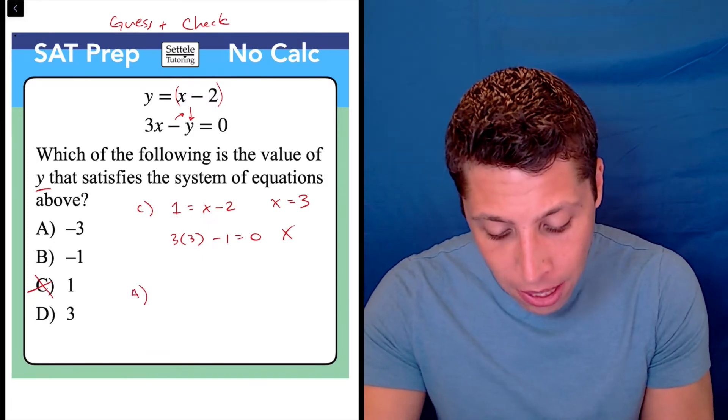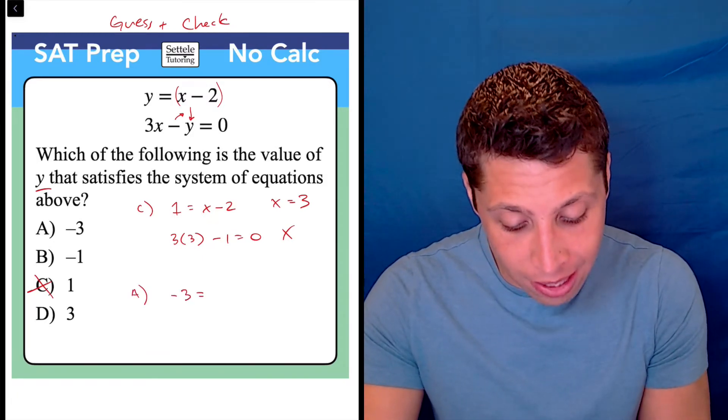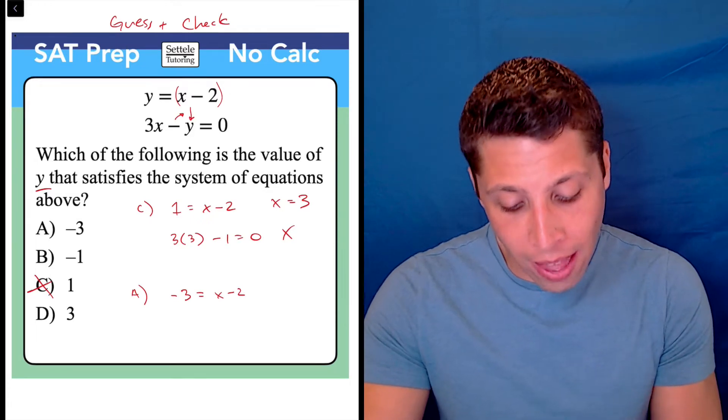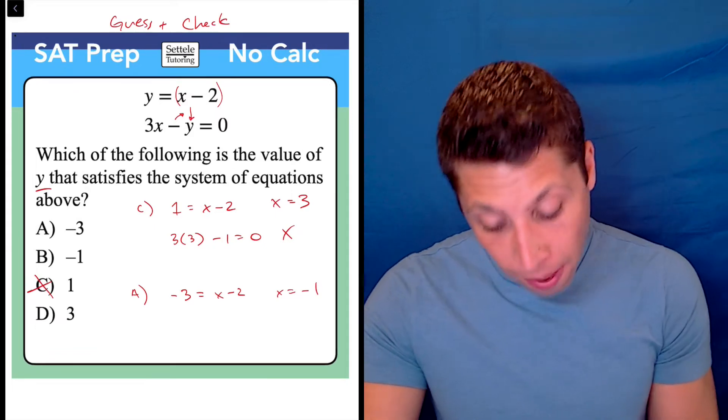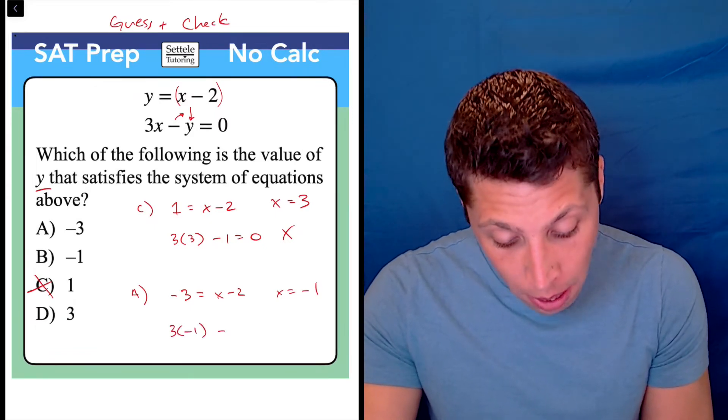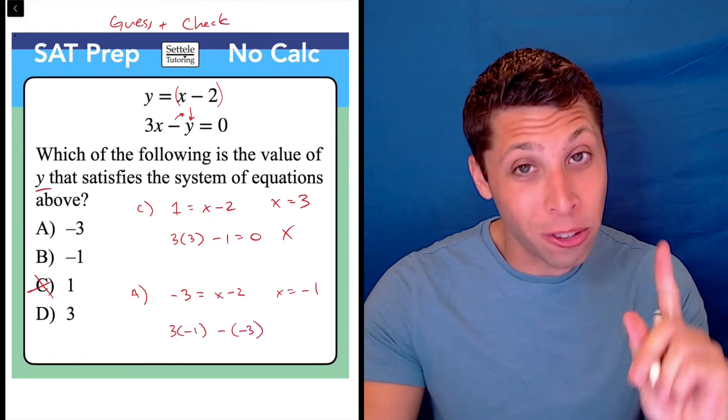The right answer is going to end up being A. If we do negative 3 is equal to x minus 2, okay, that's only going to happen, we add 2 to both sides, is if x is equal to negative 1. And then 3 times negative 1 minus negative 3. There's all those negatives.